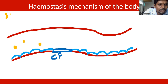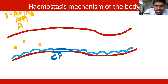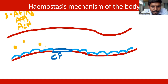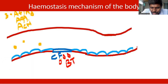Platelets perform three important functions, called the Triple A: Attachment (adhesion), Aggregation, and Activation. First is attachment, second is aggregation, and third is activation. Since there is a cut, bleeding has started, which can be measured by bleeding time.